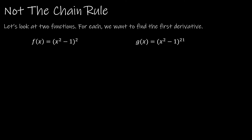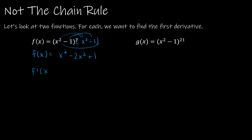For our first question, f(x) = (x²-1)². Without knowing the chain rule, the only way to tackle this is to foil it out, since we have (x²-1) twice. That gives x⁴ - 2x² + 1. The derivative is 4x³ - 4x, which factors to 4x(x²-1).